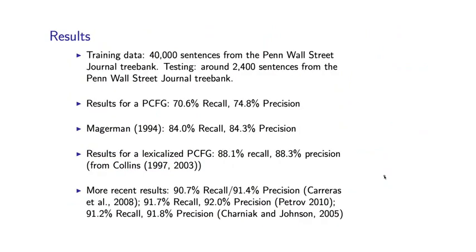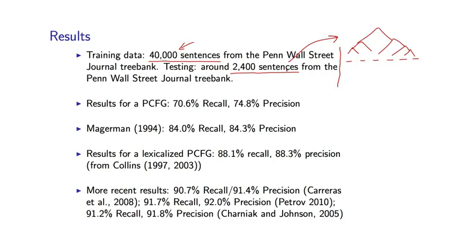Let me give some indication of how well different parsers work under this metric, using the Penn Wall Street Journal TreeBank with about 40,000 sentences as training data and 2,500 sentences as test data. Each test example consists of a sentence with a human annotated tree. We run our parser on these 2,500 sentences and compare the output to those trees using recall and precision.